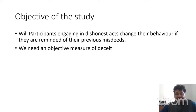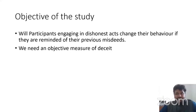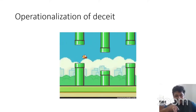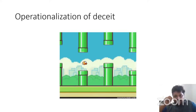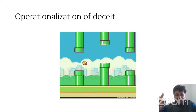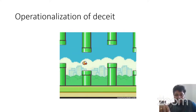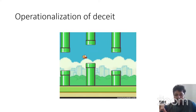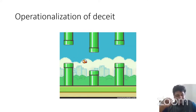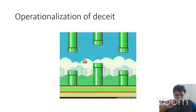To operationalize this, we used a game now in the public domain called Flappy Bird. In this game, you win points by navigating the bird through parallel pipes. We modified the source code: participants move the bird to the right through parallel pipes, but the score is not displayed on screen. They are instructed to count their own score and report the highest score out of 20 chances.